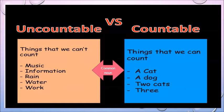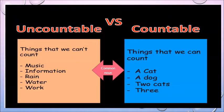On the other hand, countable nouns are things we can count easily with the help of numbers: one, two, three, four, five. For example: a cat, a dog — that suggests one cat, one dog, two cats, three umbrellas, four brothers. Things that can be counted easily are called countable nouns, and things that cannot be counted easily are called uncountable nouns. For uncountable nouns, we always have to make a guess; for countable nouns, we can tell the exact quantity.